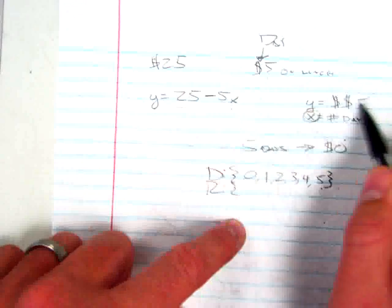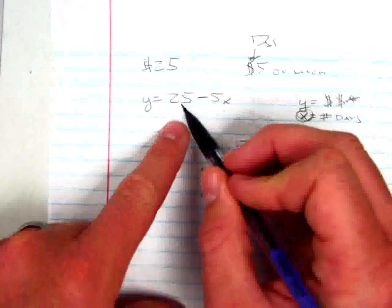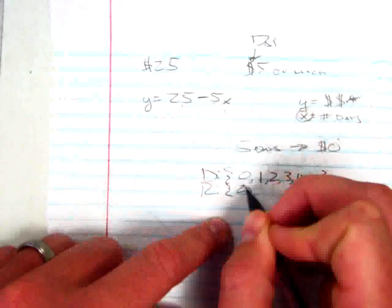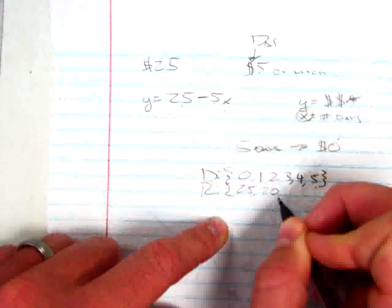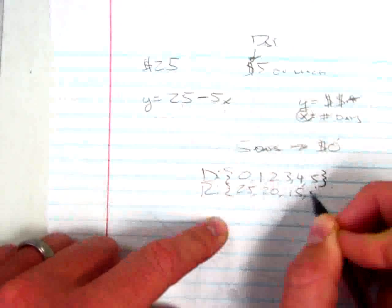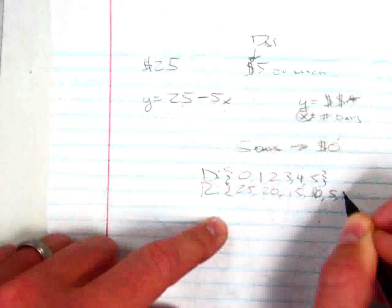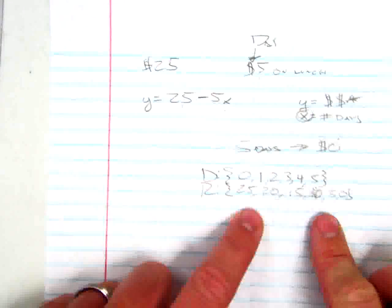Obviously, is my range, or in other words, the amount of money I have, ever going to be higher than $25? No. The highest it will be is $25, and it's decreasing by 5 every day.